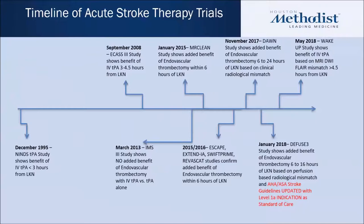This is one of my favorite slides. It takes us through the timeline of the most important acute stroke therapy trials. Starting back in 1995 with the NINDS TPA study, showing the benefit of intravenous alteplase up to three hours from last known well — really the first trial to show that we had an acute time-based lytic therapy to offer to our stroke patients. Our colleagues in Europe then did the ECAS-3 study, extending the time window from three to four and a half hours from last known well, published in September of 2008.